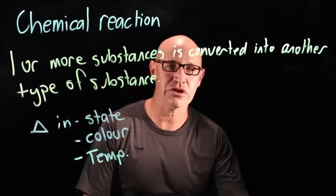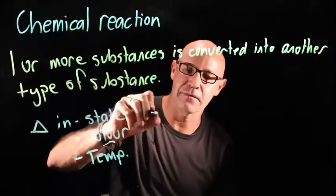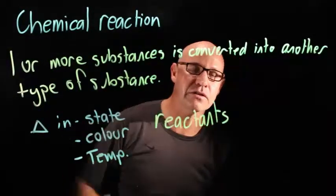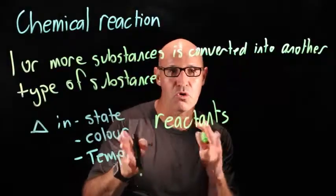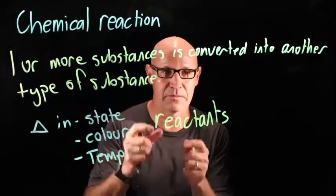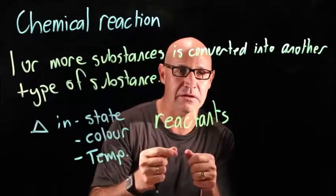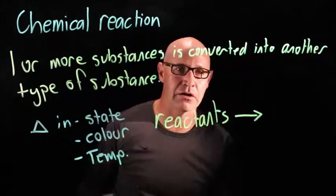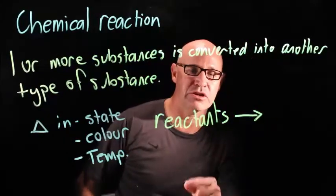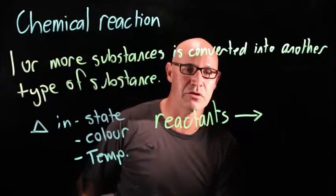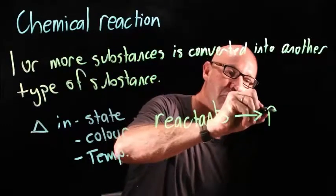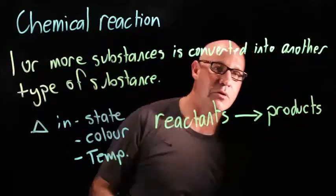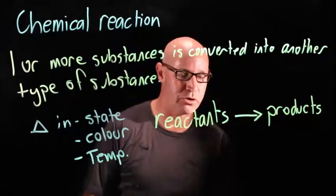In a chemical reaction we say that we have reactants—one or more reactants. They're the substances that participate in the chemical reaction. And then we have an arrow. That arrow implies the chemical reaction and also the direction of the chemical reaction. So we have reactants and we have products. Products are what are produced by the chemical reaction, and there might be one or more products.